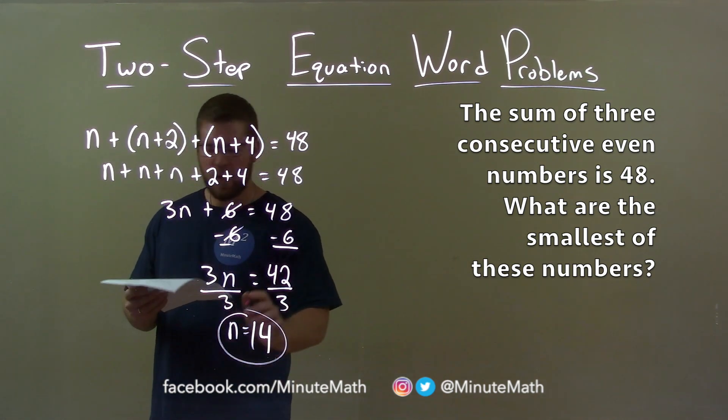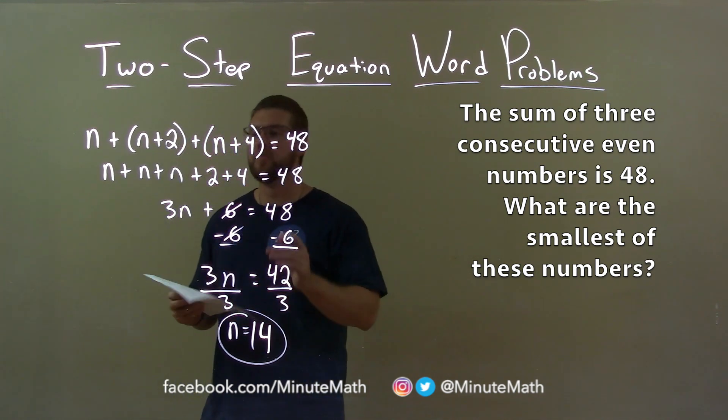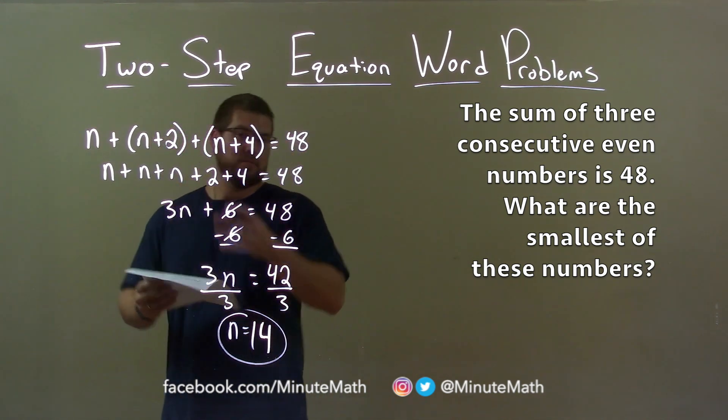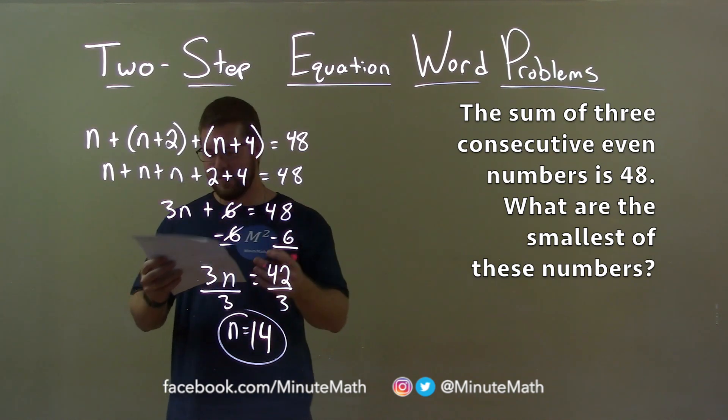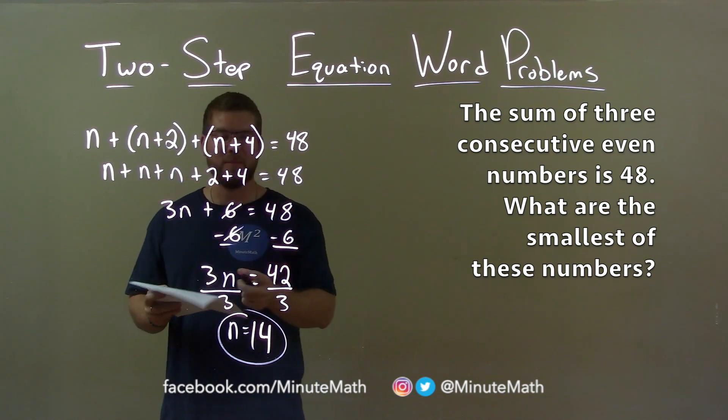14. And so my final answer is 14. 14 is the first even number where the three consecutive even numbers sum up to be 48.